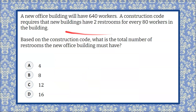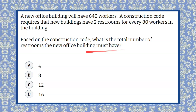Our math question today states that a new office building will have 640 workers. A construction code requires that new buildings have two restrooms for every 80 workers in the building. Based on the construction code, what is the total number of restrooms the new office building must have?